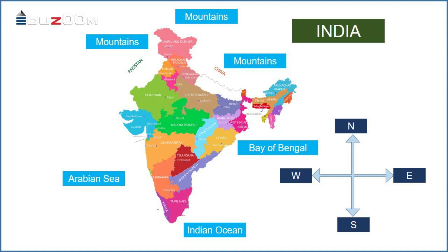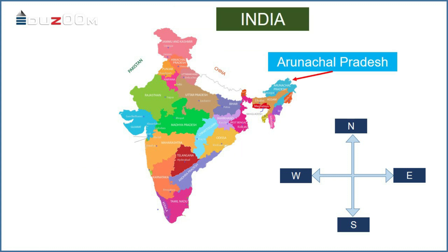The southernmost point of India was Indira Point in the Great Nicobar group of islands, and it is not visible today because it was submerged under the sea in 2004 due to the tsunami. Arunachal Pradesh is called the land of the rising sun in India, because the sun rises first in the easternmost part of India, that is Arunachal Pradesh.